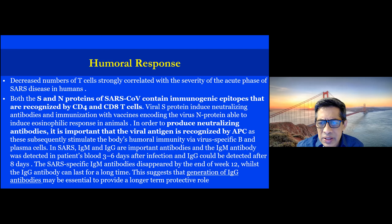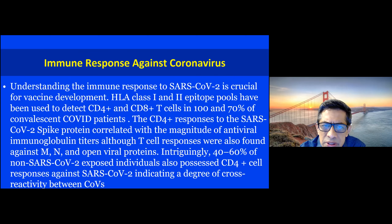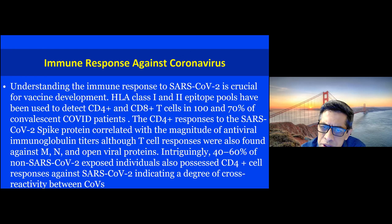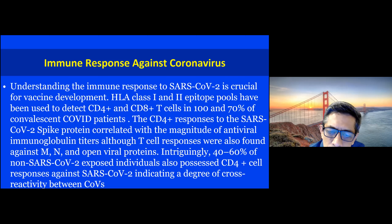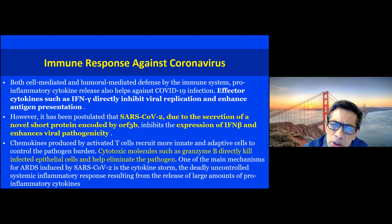We recognize that neutralizing antibodies are generated as they recognize the viral antigen by antigen-presenting cells. HLA class 1 and class 2 epitope pools have been used to detect CD4 and CD8 T cell pools from convalescent plasma of COVID-19 patients. Intriguingly, 40 to 60 percent of non-SARS-CoV-2-exposed individuals possess CD4 cell responses against SARS-CoV-2, indicating cross-reactivity between coronaviruses. Both cell-mediated and humoral immune systems have effector cytokines like interferon-gamma which inhibit viral replication and enhance antigen presentation.